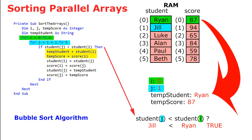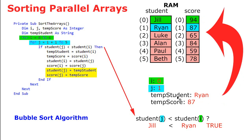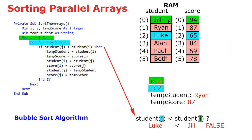Walking through the logic: if student sub j, which is Jill, is less than student sub i, which is Ryan — that's a true statement — it executes the body of the if structure. First, we store the values at element sub zero for both student and score into temp student and temp score. Then we place the value at element j into element sub zero for both arrays. Then we take the temp values and place them in element sub one. Then j increments to two, comparing element zero (now Jill) with Luke. Luke is not less than Jill, so nothing happens.